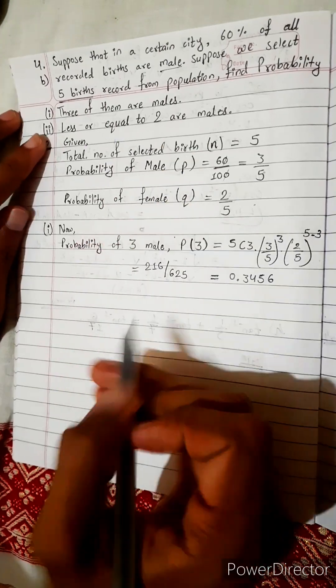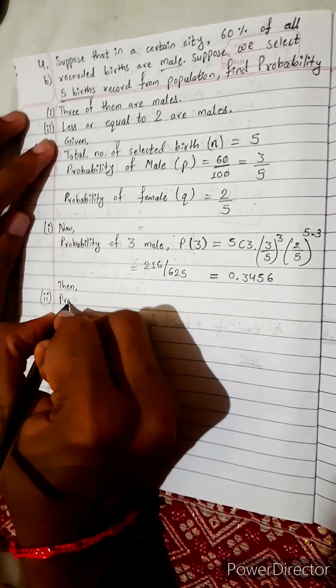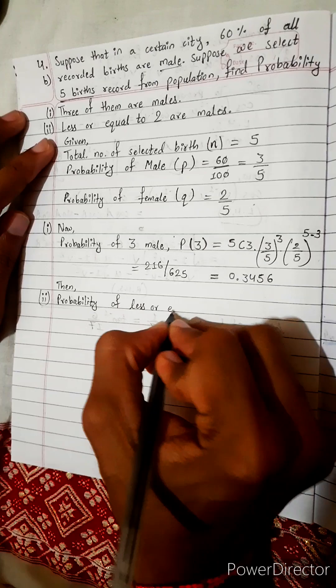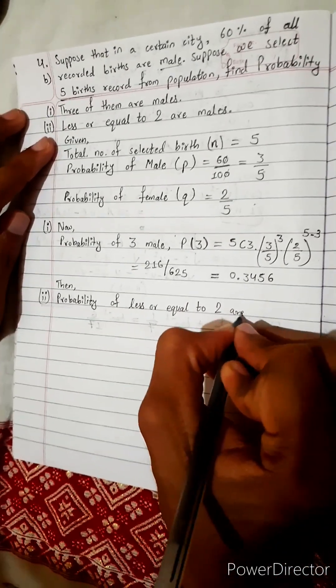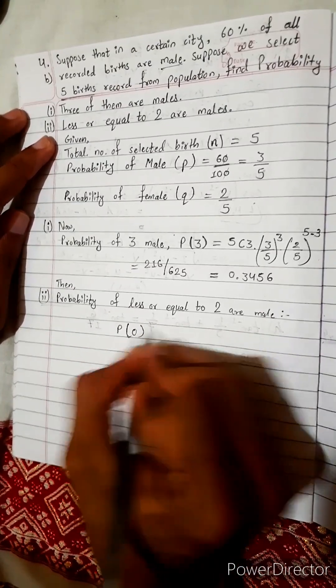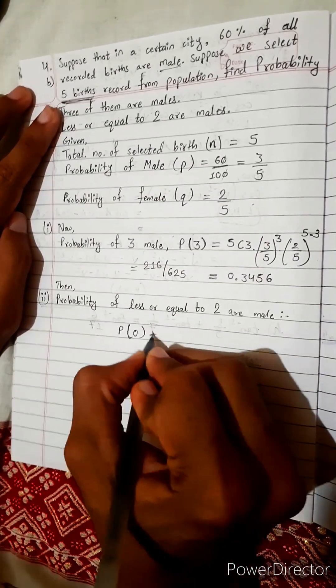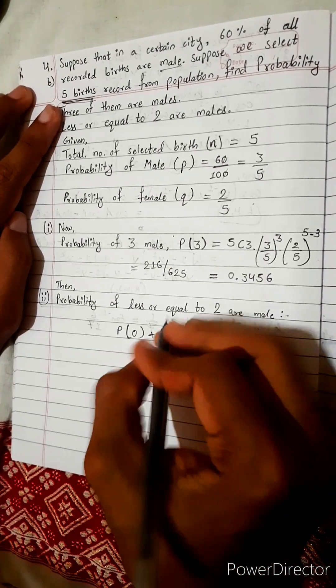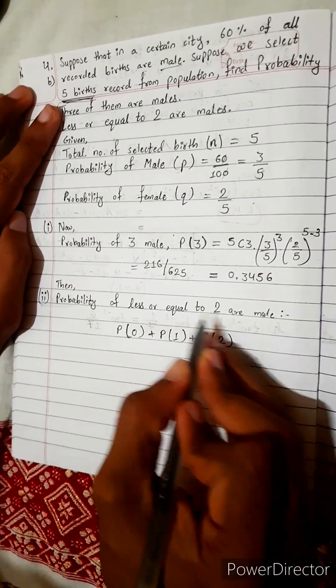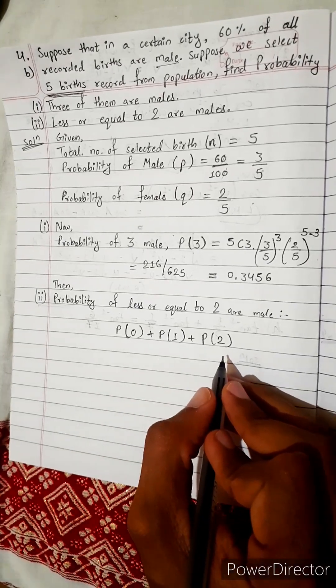Now one answer we got. Less or equal to 2 are male. Then what does this mean? The probability of less or equal to 2 males means less than 2. One is zero male, there can be all female also. In five births, all five daughters, then zero male. If four daughters and one son, then one male. And it can be two sons also. Either less or equal to 2. Not more than this, there cannot be three sons, only up to this. Now add, find this separately and add. Very simple.